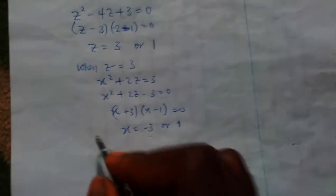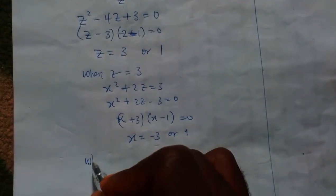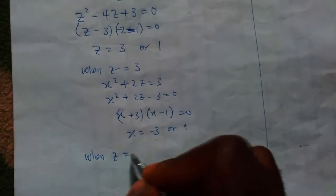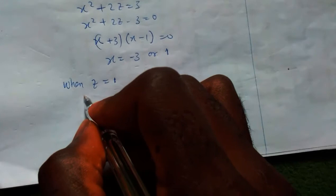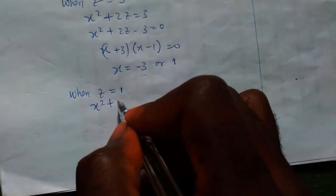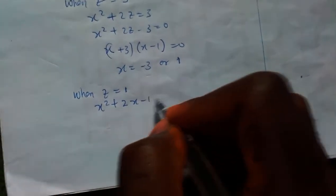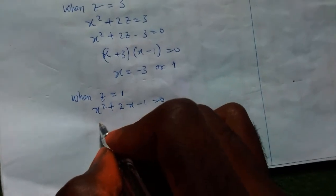Finally, when z equals 1, we have x squared plus 2x minus 1 equals zero, from which using factorization method...